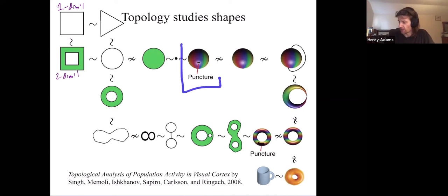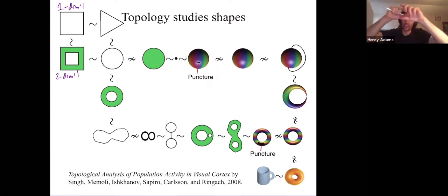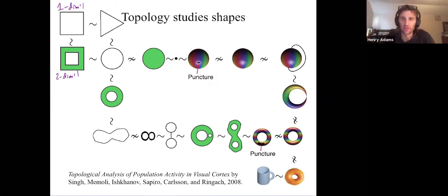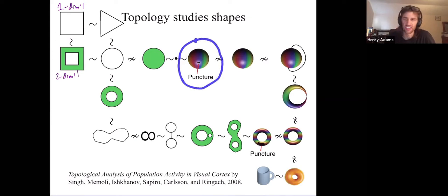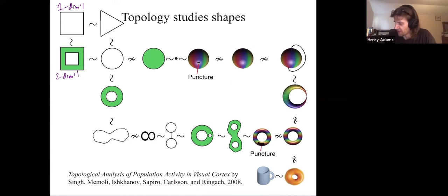A two-dimensional sphere — like a balloon, the surface of a balloon — if you puncture that, it can also shrink down to a disk, which can then shrink down to a point as well. A two-dimensional sphere — a balloon that's punctured — is not the same as an unpunctured sphere. This unpunctured sphere can hold air inside of it.